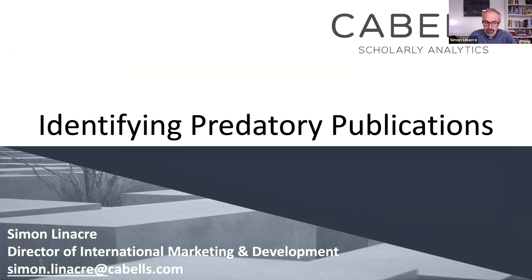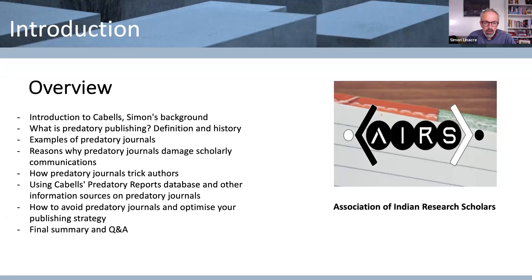So after a bit of an introduction to Cabell's, because some of you probably haven't heard of Cabell's, we'll go into some background about how we define a predatory journal, the reasons why predatory journals are potentially so damaging to scholarly communications, the types of tricks they use to entice authors into publishing in them, what Cabell's does about this problem with our predatory reports database, and then finally, the more strategic aspects of how authors can use this information to create a publishing strategy. We'll have time at the end for Q&A, so if people want to put questions in the chat function, we can come to those at the end.